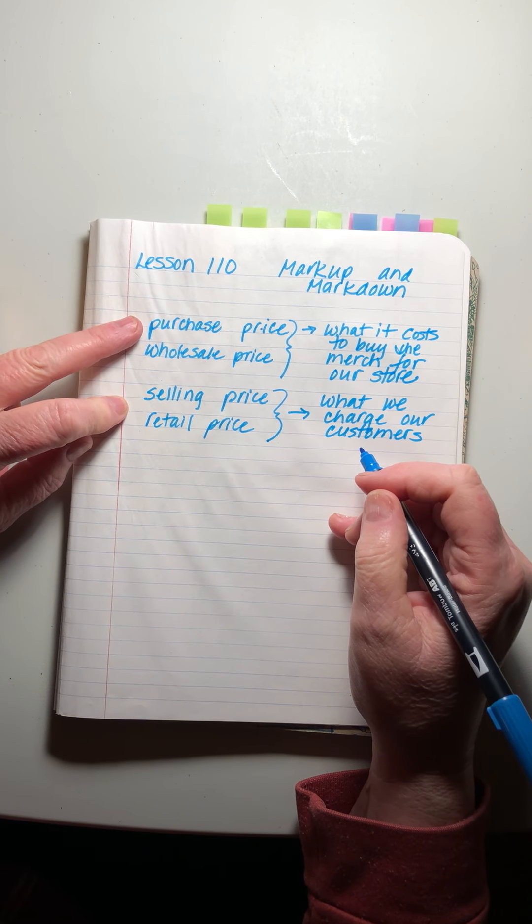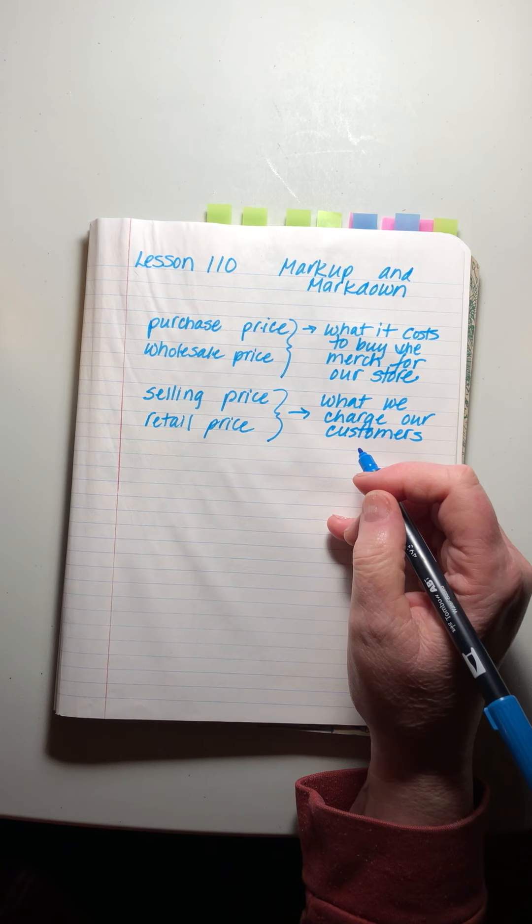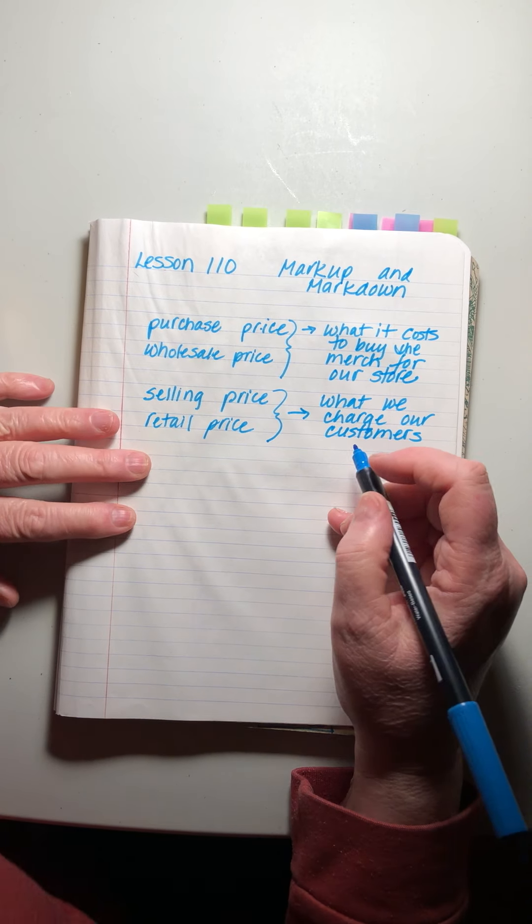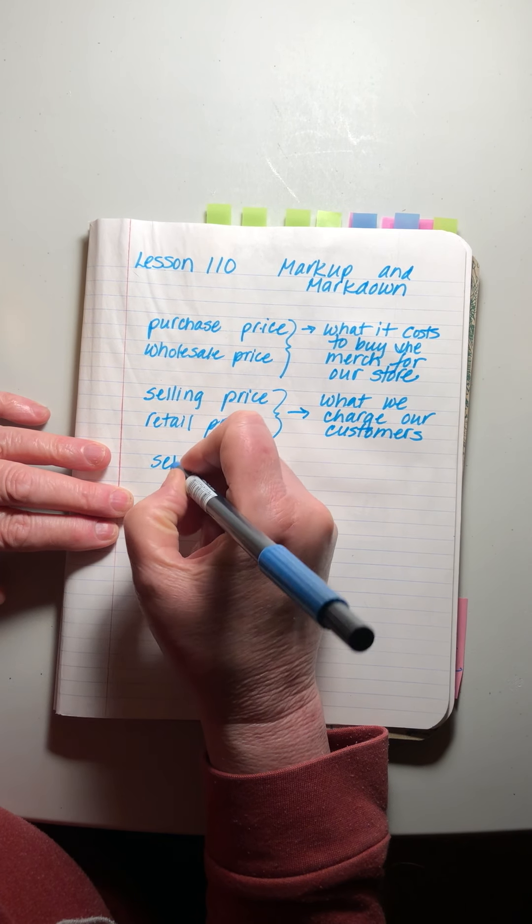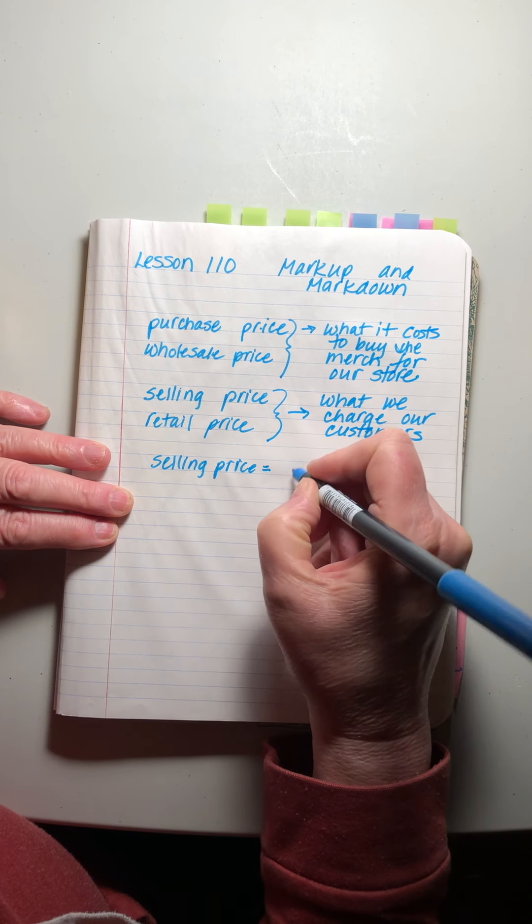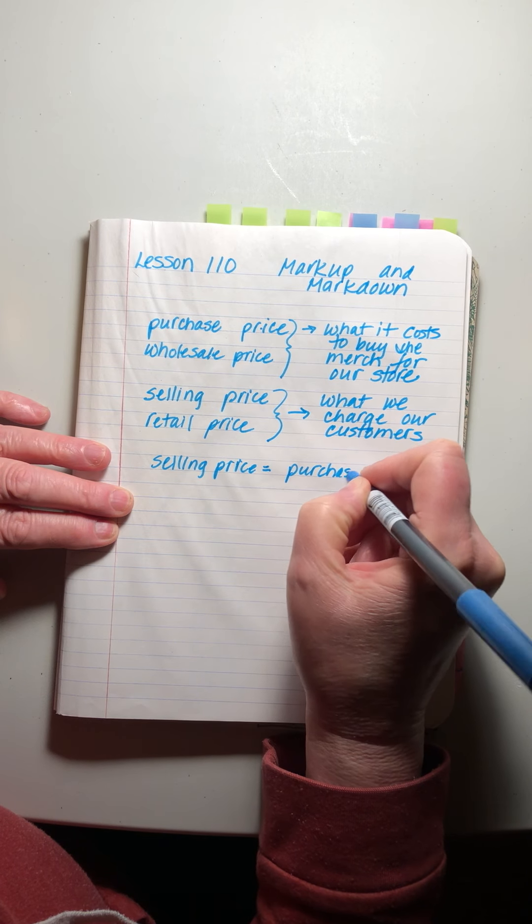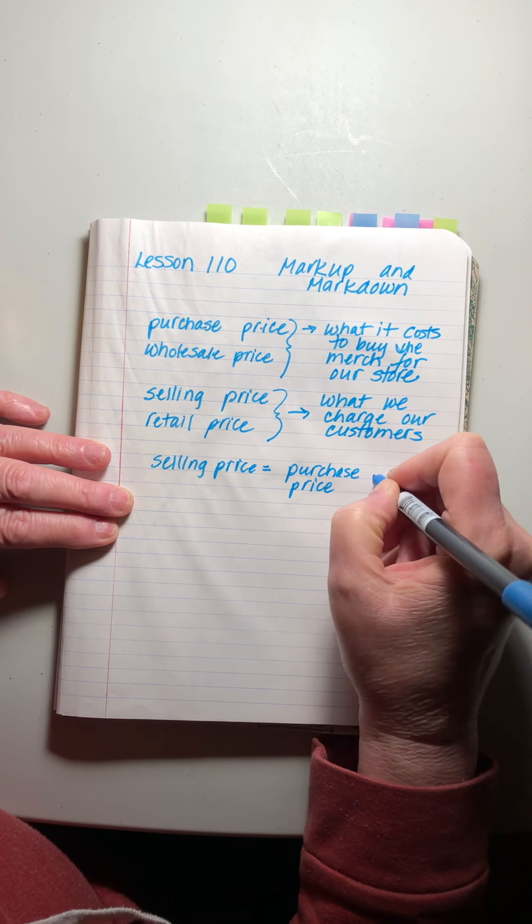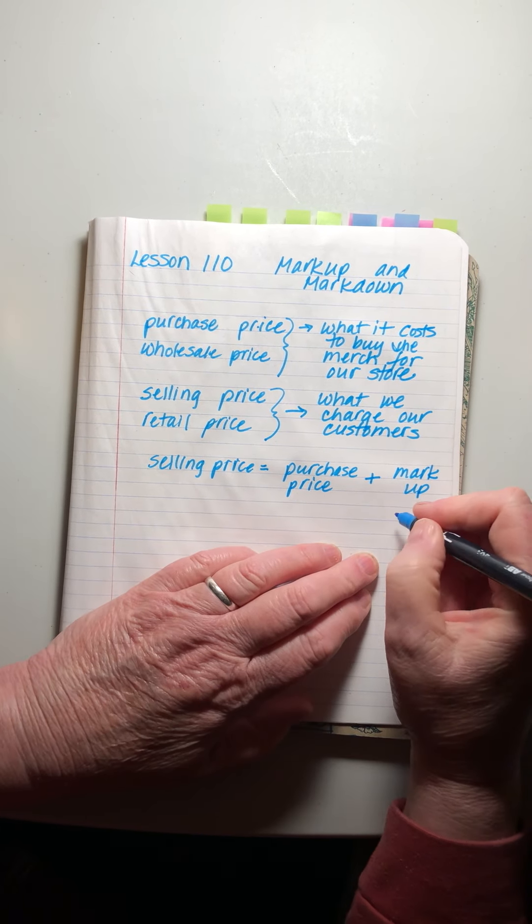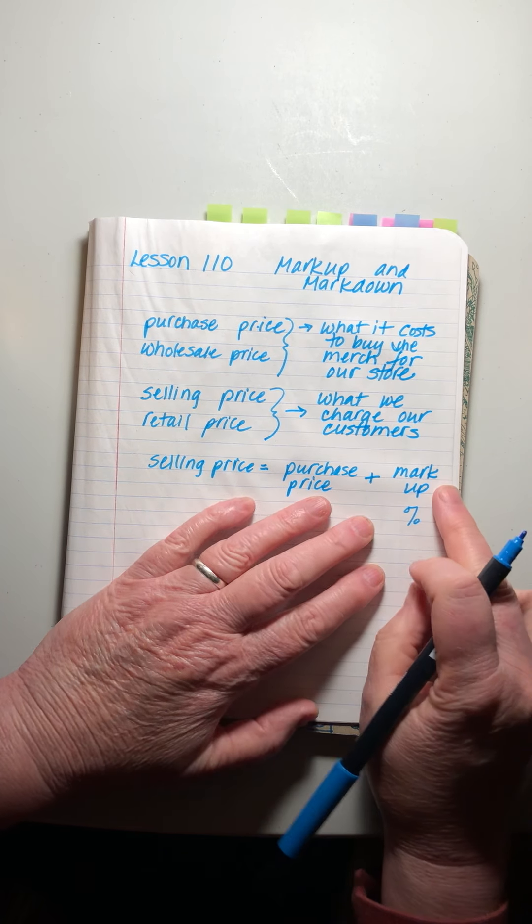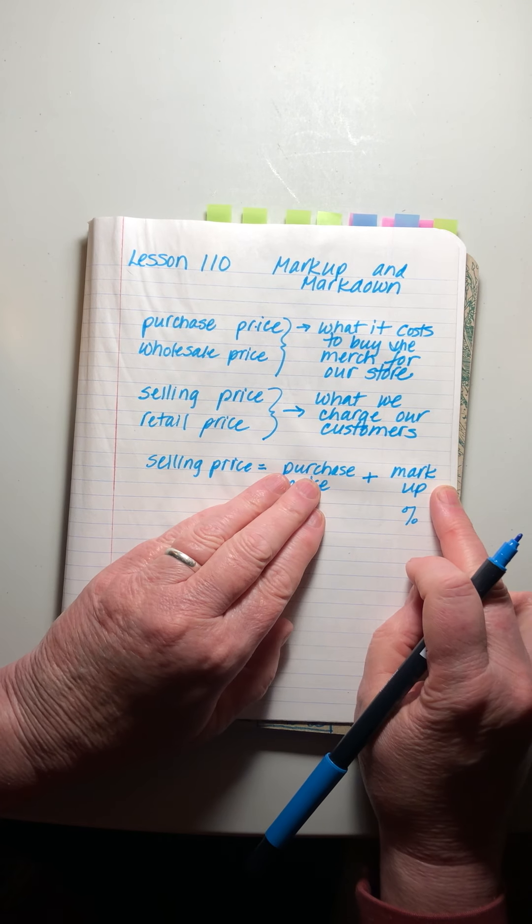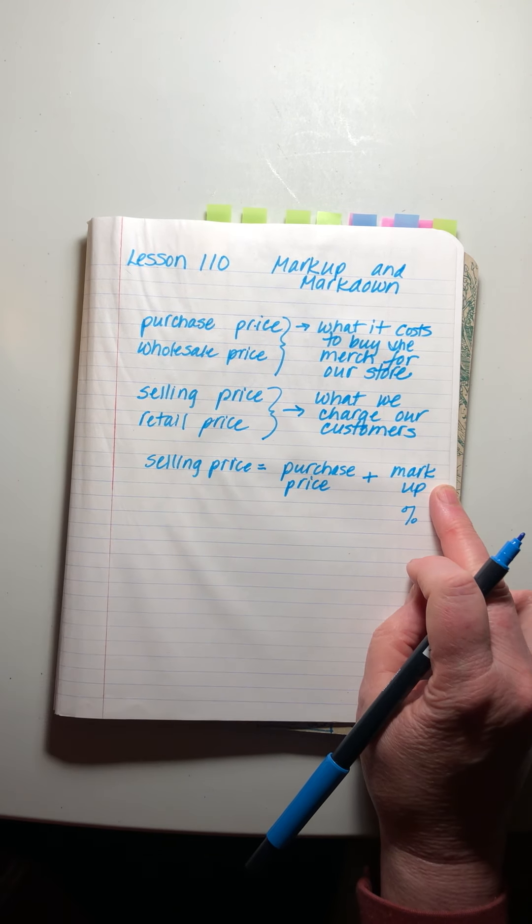These two prices shouldn't be the same because we the shopkeepers need to make money off this. If we charge the same thing we're not making any money. So there's a formula here that says that the selling price equals the purchase price plus what's called a markup. It's usually a percentage. We take a certain percentage - it can be based on the purchase price or based on the selling price.